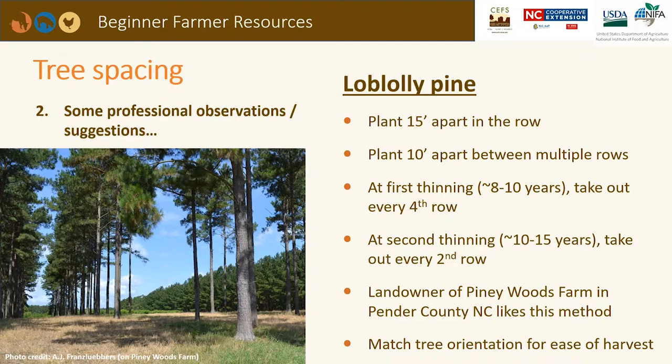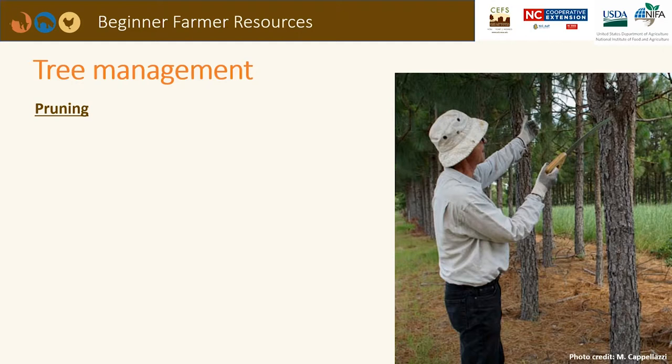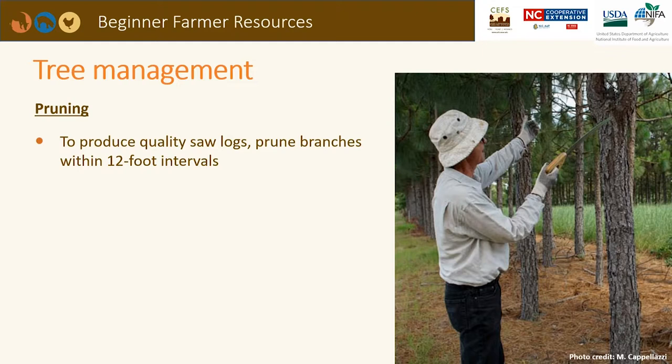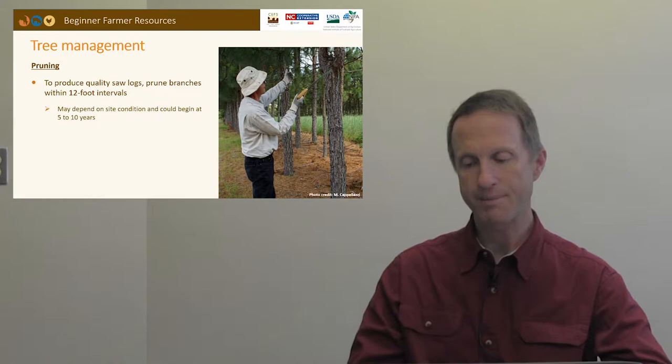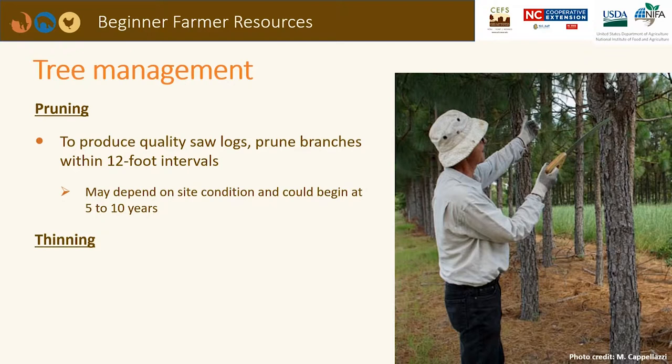For tree management, consider pruning if you're looking for saw timber. To produce quality logs, the stem needs to be in 12-foot intervals, so if you want a single 12-footer, you can prune accordingly. Pruning at a relatively early stage encourages single stem growth for saw timber. At five to ten years, one might consider a first pruning. If you start with 250 trees per acre, thinning will be needed to allow forage to grow underneath.